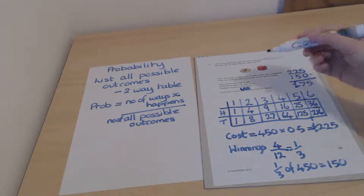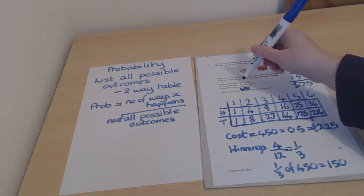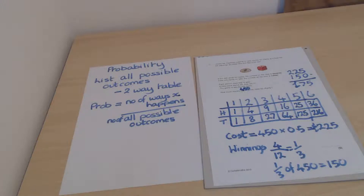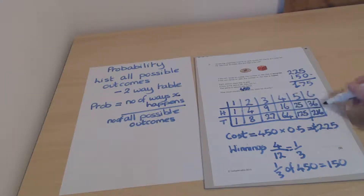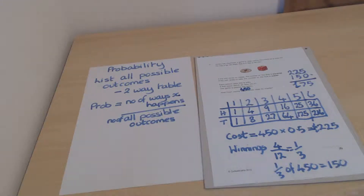To raise more money, you could increase the entry fee or require a much bigger score to win. For example, if the winning threshold were above 100, only 1 in 6 people would win, paying out only £75 and raising £150 instead. That's how you can use these tables to help figure out probabilities.